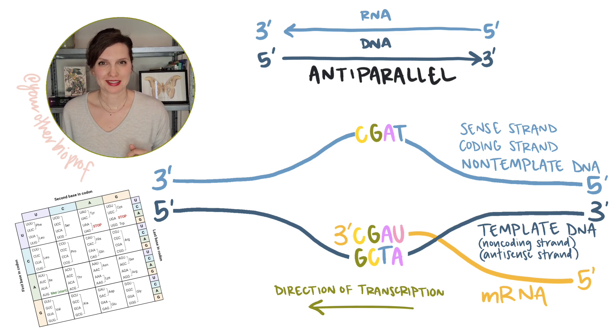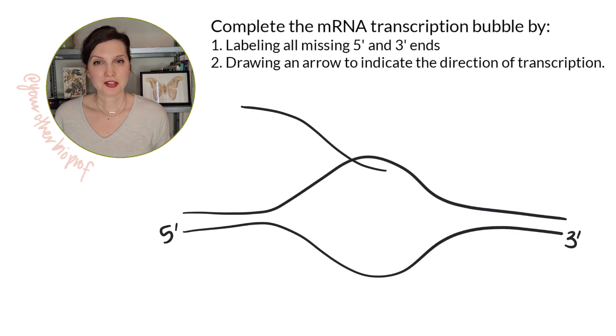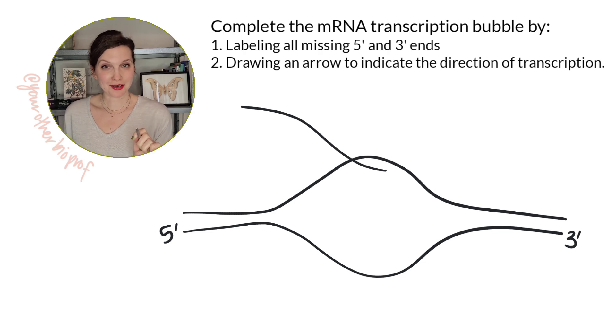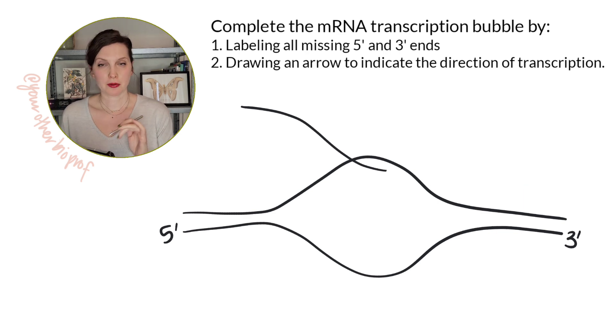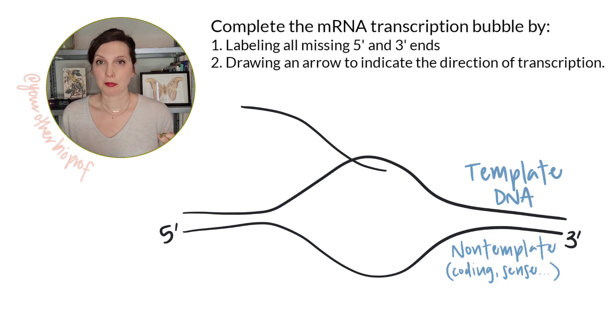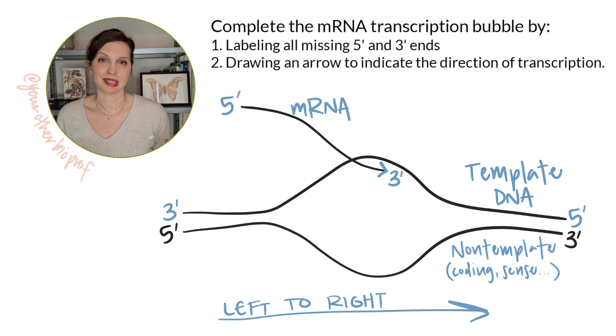Now, let's do a couple of examples and see if it does make sense. All right, I've got a transcription bubble for you, and here we want to label the missing five prime and three prime ends and determine the direction of transcription. Pause the video until you've got it. Here, we were missing the five prime and three prime ends from the template strand. Of course, the template strand is going to be anti-parallel to the non-template strand, so we can go ahead and add those. And of course, the growing three prime end of our mRNA is going to be inside the bubble, and the five prime end, the part made first, will be outside. Now, if we stick a little arrow onto the three prime end, we can see that transcription is going from left to right.